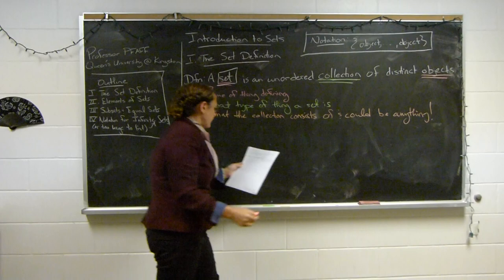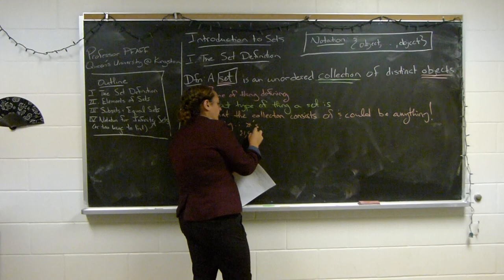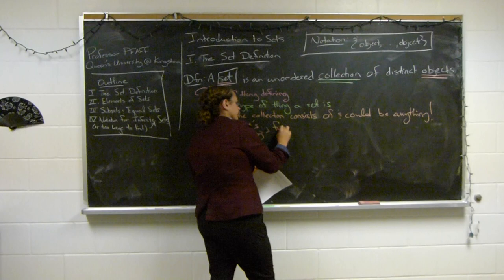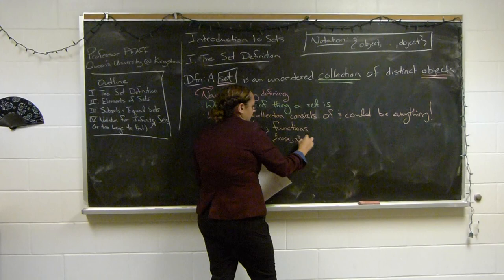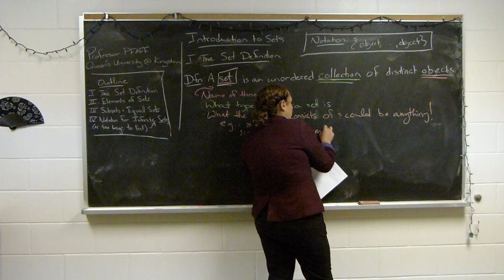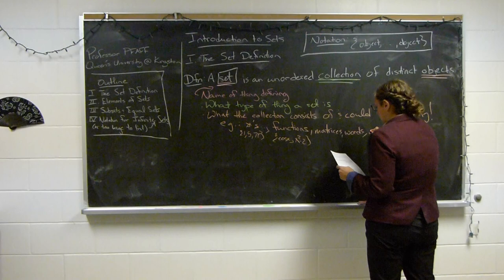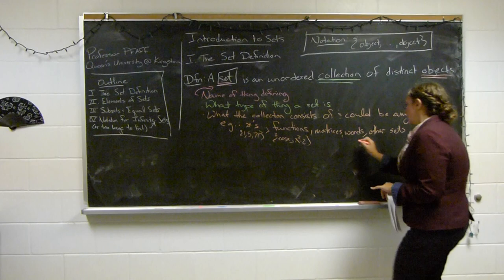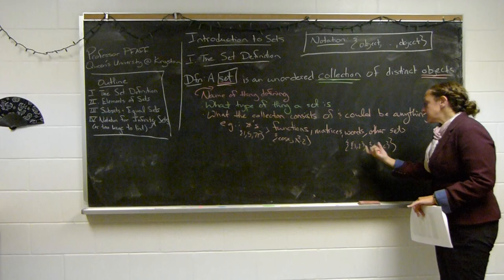For example, the objects could be numbers — like 1, 5, pi. They could be functions, like cosine of x and x squared minus 2. They could be matrices, words, other sets, or even a mix of these objects. Sets of sets is the one that often confuses people — you might have one set containing numbers and another set containing A, B, C as two objects.